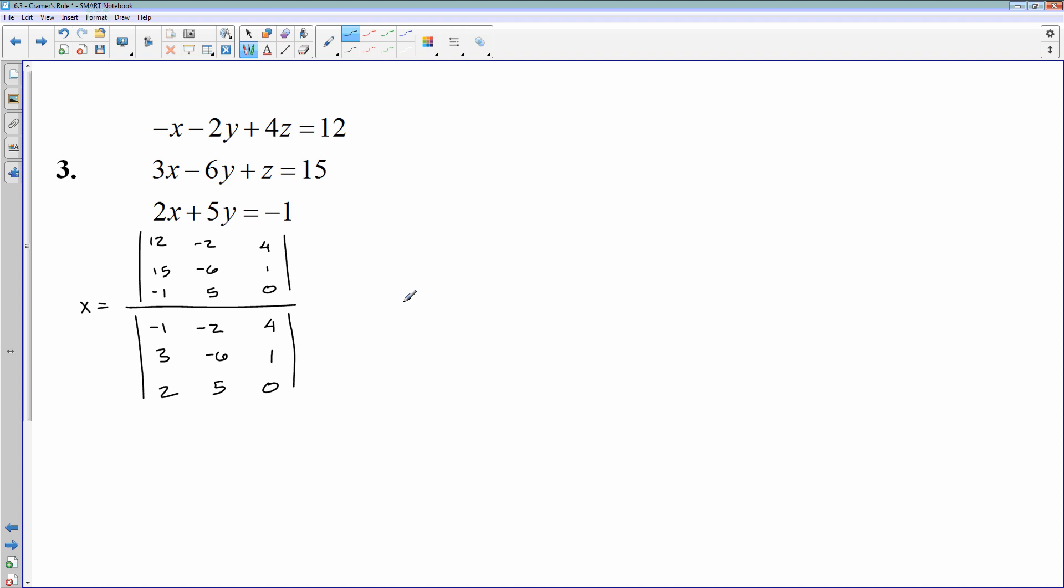For Y, same thing. I'm going to copy and paste because that is what's going to go in the denominator. So my bottom one never changes. The numerator, since I'm replacing my Y's, solving for Y, then 12, 15, and 1 is going to go down the middle, which is where the Y coefficients were. Everything else is going to stay the same. So negative 1, 3, 2 on the left column, 4, 1, 0 on the right column.